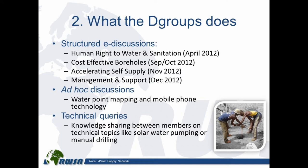Another use that has emerged is a sort of technical query service, where people email in with questions like: where can I get a certain valve part for an AfriDev in Ethiopia? Or: I came across this hand pump in the field — what on earth is it? Members have been extremely helpful in providing detailed responses to those technical queries, and that really adds value to what we do as a network.